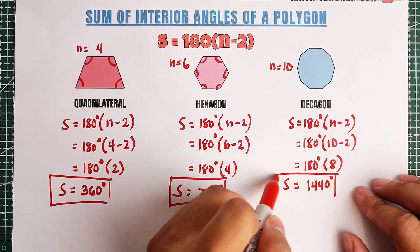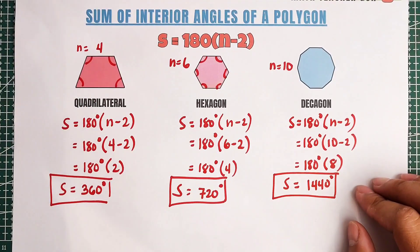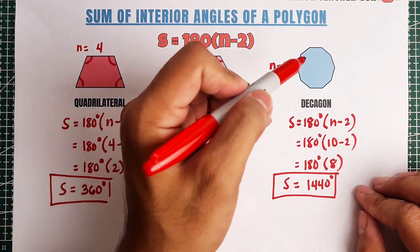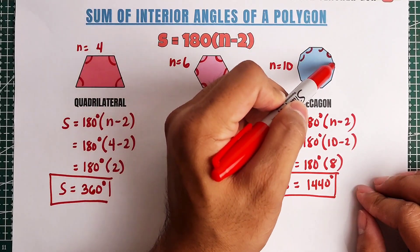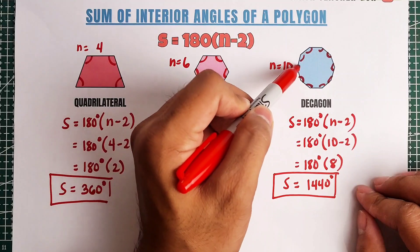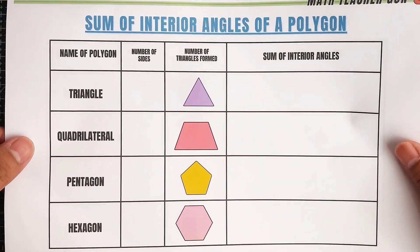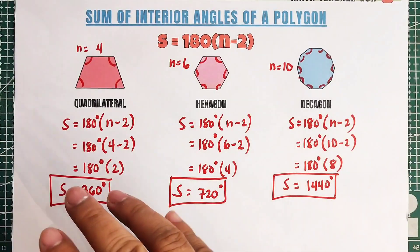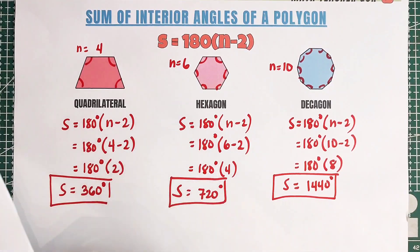Meaning, in a regular decagon, the sum of all 10 interior angles is equal to 1440 degrees. Now guys, it's our turn to complete this table. So let me help you without calculating each one of it.